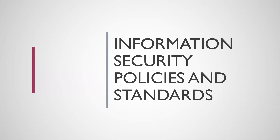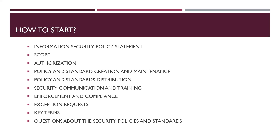When talking about the information security policy, we first start with defining the policy statement. Inside the policy statement, we can define the fundamental significance of information security by aligning a set of policies and standards in order to protect the company's information assets, while maintaining compliance with regulatory, statutory, contractual, and policy requirements pertaining to the CIA — that is, confidentiality, integrity, and availability. You can also mention that this is not a standalone document.